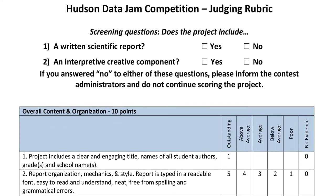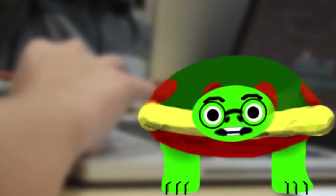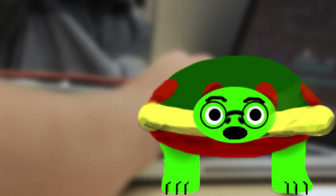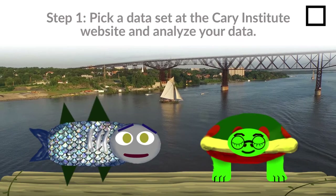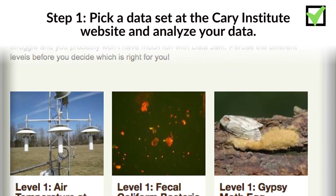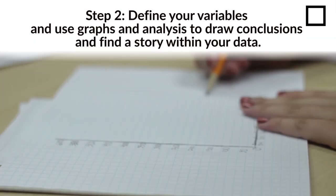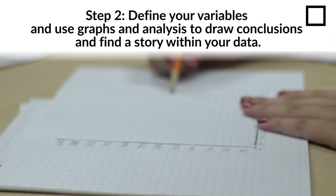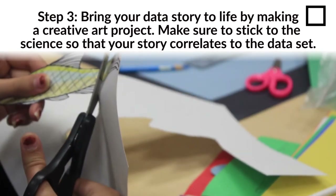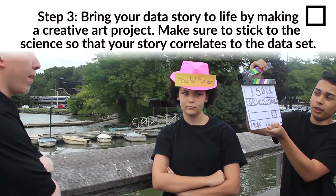Remember, as you go through the process, check the rubric to make sure you're on course to complete your project. And plan a work schedule in advance so that you use your time efficiently and can submit your project by the due date. To recap: step one, pick a data set at the Cary Institute website and analyze your data. Step two, define your variables — your characters — and use graphs and analysis to draw conclusions and find a story within your data. Bring your data story to life by making a creative art project. Make sure to stick to the science so that your story correlates to the data set.